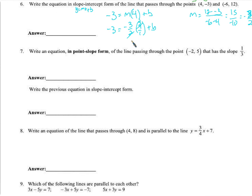And I can use that slope and this x and y to solve for b. Just like we did in the previous problem. Negative 3 equals the slope, negative 3 halves, times 4 plus b. Simplify here. We got 2. So, we got negative 3 equals negative 6 plus b. B equals 3. The equation would be y equals negative 3 halves x plus 3.